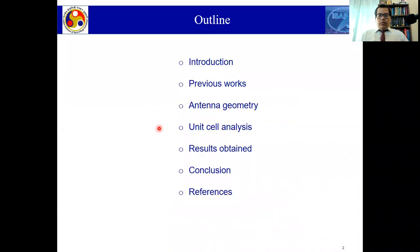This is the outline of the talk. First, we'll introduce you to the topic, then we'll discuss some previous works existing in the literature. Then we'll discuss the proposed antenna geometry, followed by unit cell analysis of the SSVP structure. Then we'll discuss various results including current distributions, scattering parameters, gain, front-to-back ratio, radiation pattern, and so on. Finally, I'll conclude the talk.